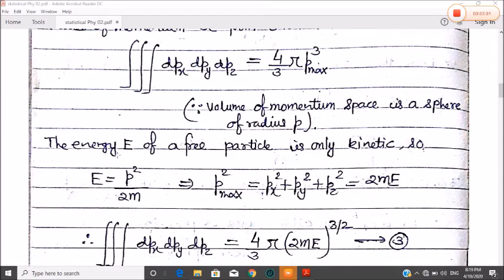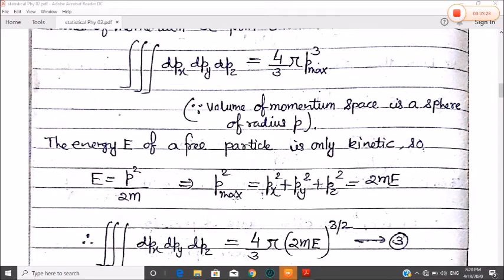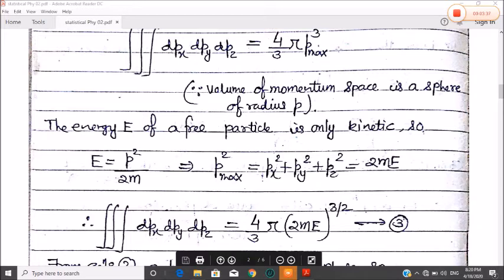Next, the energy E of a free particle is only kinetic. So using the expression E equals P square divided by 2m, P max square is equal to 2m times E, that is 2mE. So this P square max value is equal to the root of 2m times E.